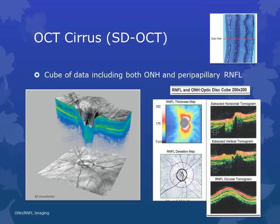The Cirrus OCT is the Zeiss machine which uses spectral domain technology — the one with higher resolution, faster scanning, and which gives more data. Unlike the Stratus where the scans are linear, the Cirrus OCT provides an entire cube of data. There is a test called the 200 by 200 cube: 200 A scans along one axis and another 200 A scans along the other axis — 200 times 200 equals 40,000 A scans covering the entire area.